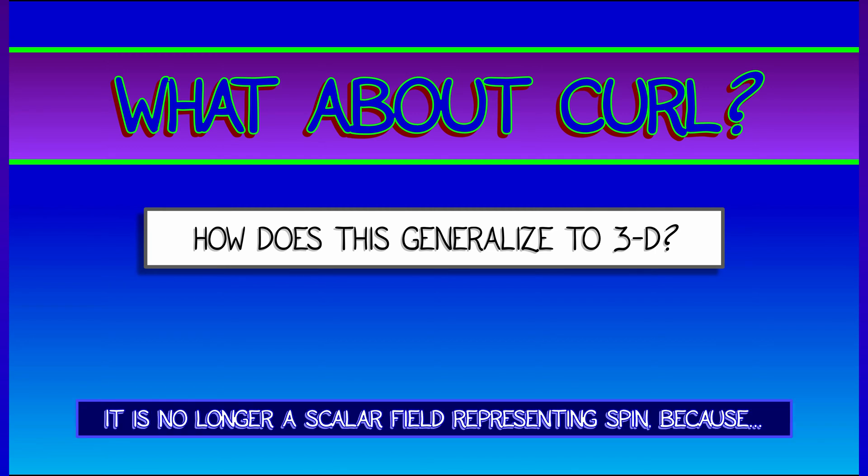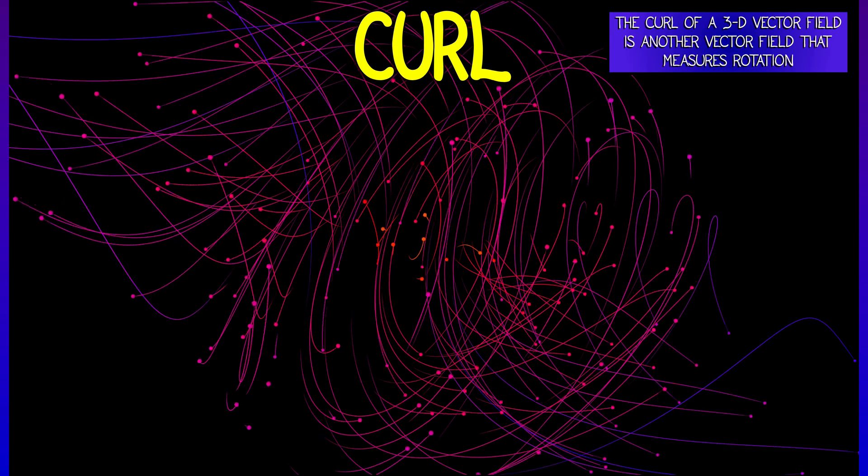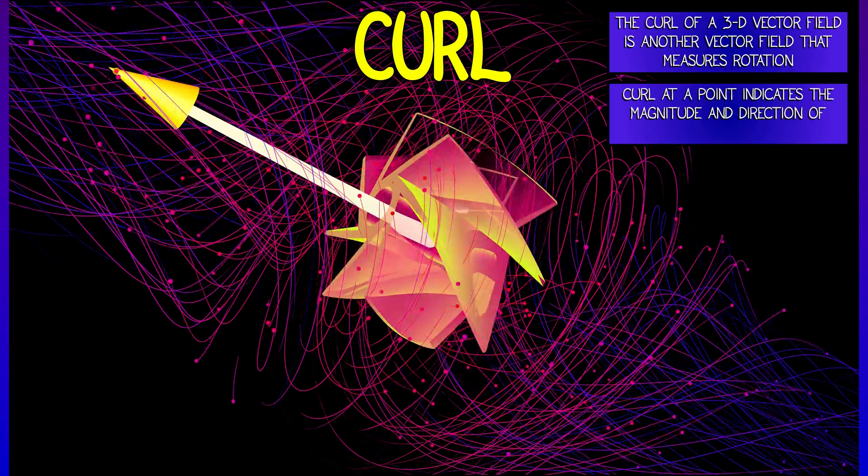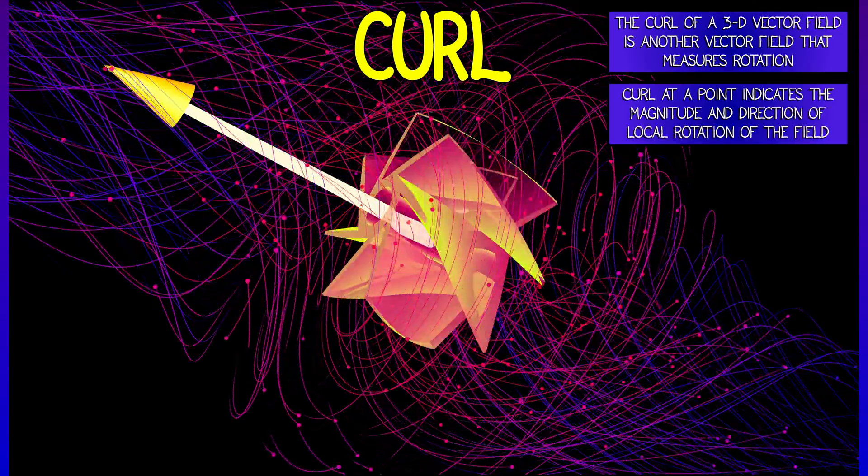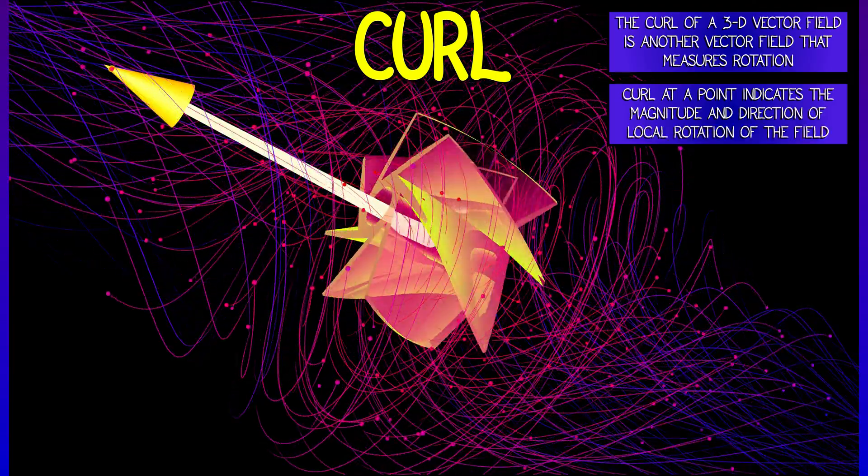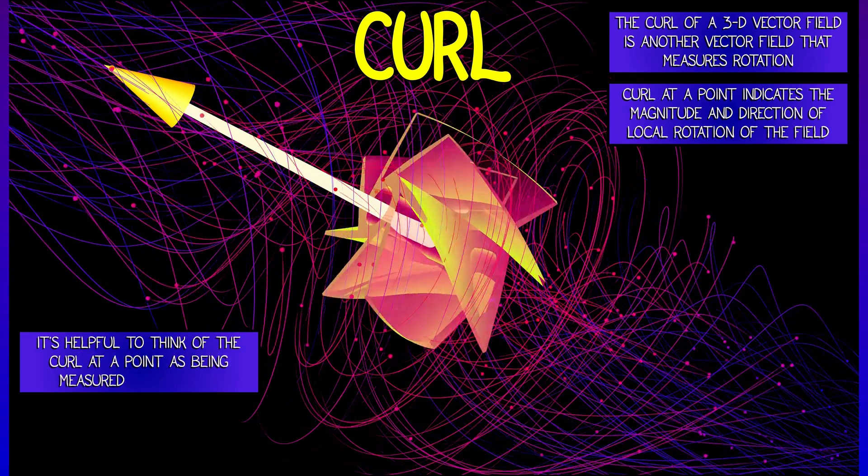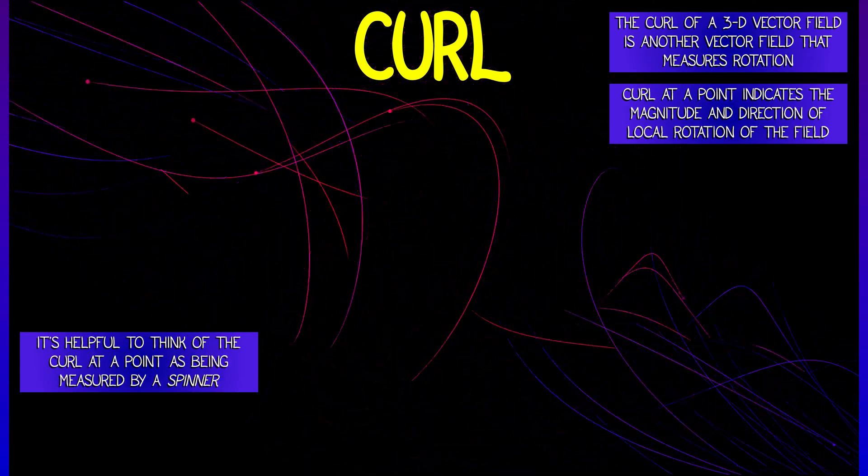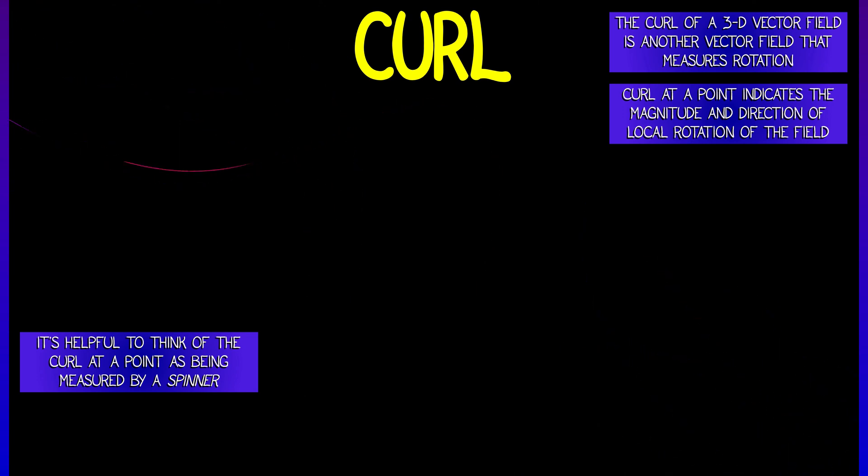The curl is not a scalar field, because we're trying to represent spin, and if you want to understand spin, then you've got to think in terms of vectors. The curl of a 3D vector field is going to be another vector field that measures the infinitesimal spin or rotation that you have going on at a point, and that has both a direction and a magnitude.